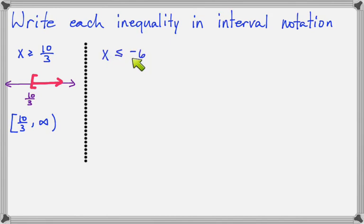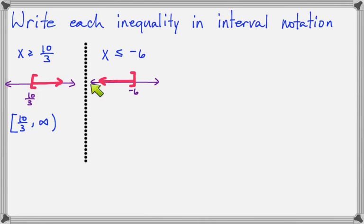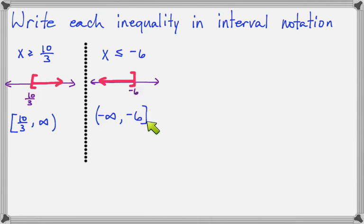Now let's do x is less than or equal to negative six. On the number line, we shade to the left with a bracket because of the 'or equal to.' This time, because the shading starts at the left end, the interval goes from negative infinity to negative six with a bracket. The infinity is always on the end where the arrow is — if the arrow is on the left, it's negative infinity; if on the right, it's positive infinity.